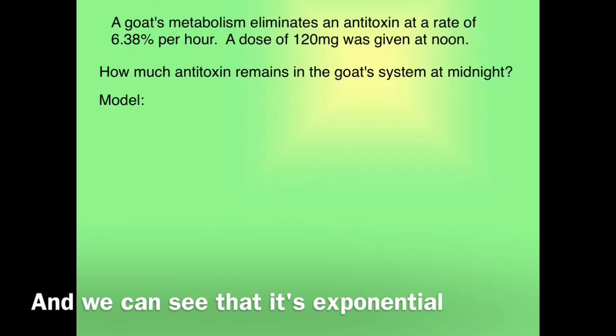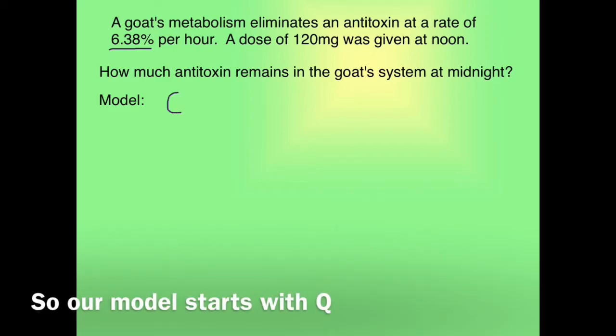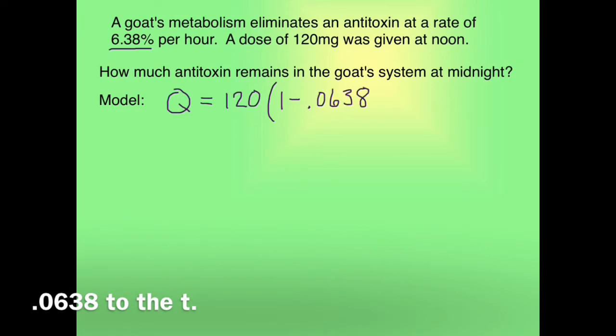And we can see that it's exponential because it changes by a percent. So our model starts with Q equals our initial dose times 1, it's decreasing, so that's a minus, 0.0638 to the T.